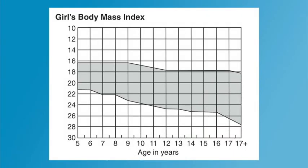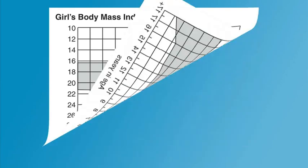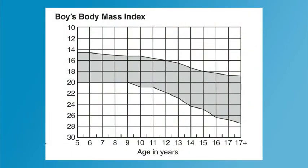If the BMI is within the range of the healthy fitness zone for the student's gender and age, the student is considered to be in the healthy fitness zone and should continue doing regular physical activity and eating a healthy diet. If the BMI falls above or below the range of the healthy fitness zone, the student needs to identify contributing factors to determine if he or she would benefit from changes to their diet, levels of physical activity, or other behaviors.